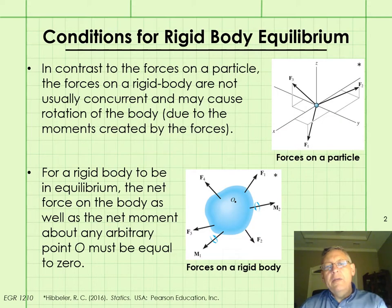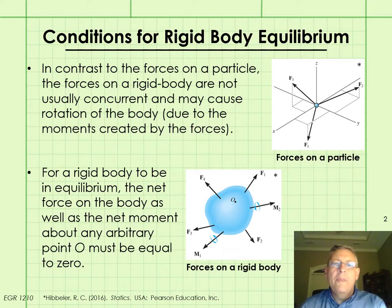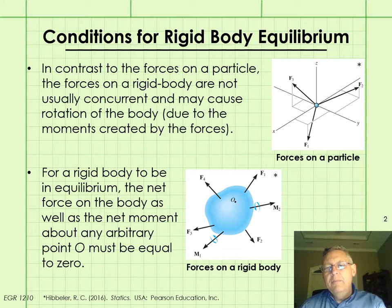Up until now, our equilibrium work in the course has been restricted to particles. Remember that particles have mass but no geometry — they just occupy a single point in space. So for bodies or parts where we could ignore their geometry and model them as a single point, we would model them as a particle. For particle equilibrium, we said that the sum of the forces on the particle have to be equal to zero.